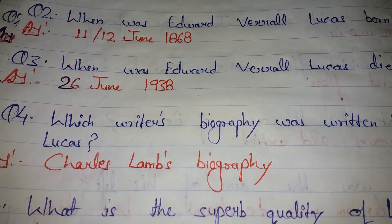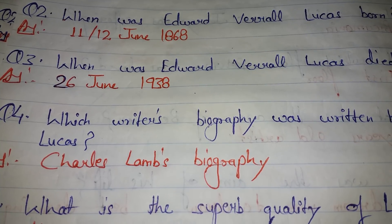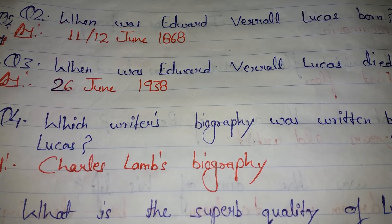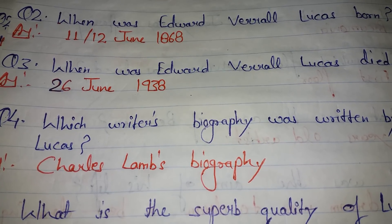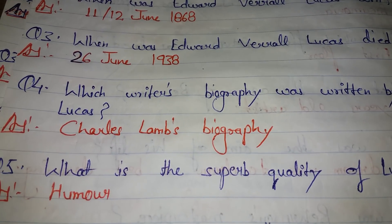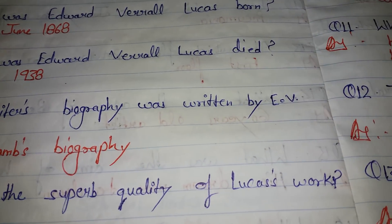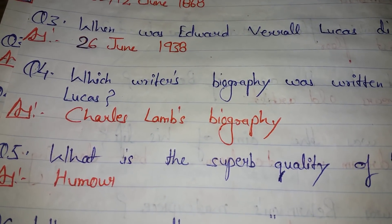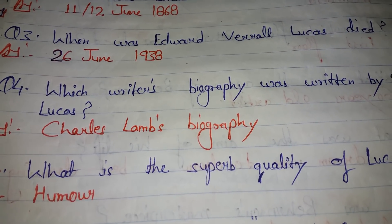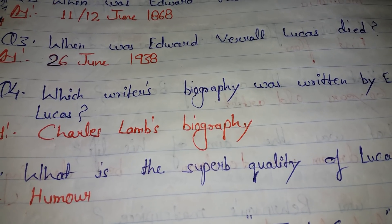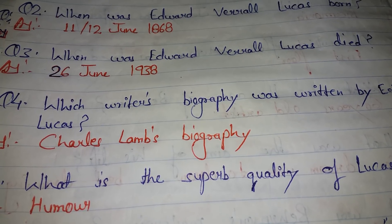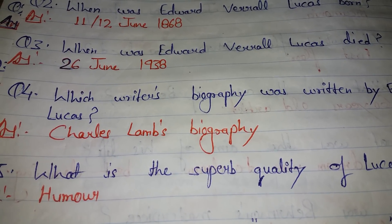E.V. Lucas wrote the biography of the famous essayist Charles Lamb. Charles Lamb's biography was written by E.V. Lucas. Next question: what is the super quality of Lucas's work? The super quality found in his essays is humor — humor is the super quality of his essays.